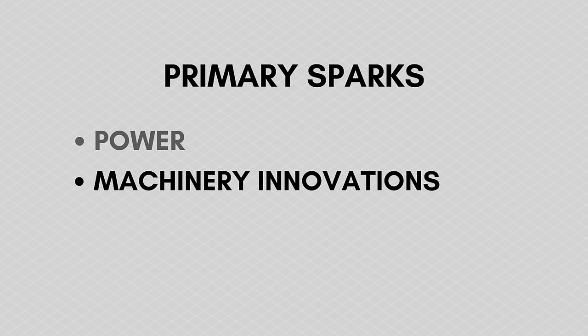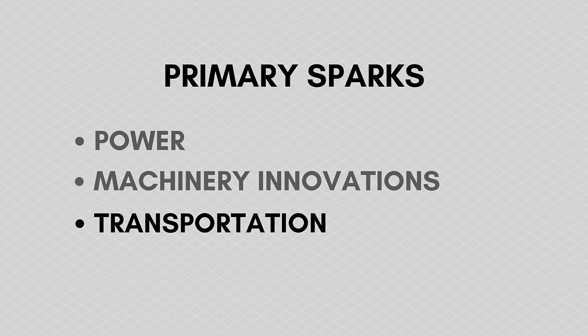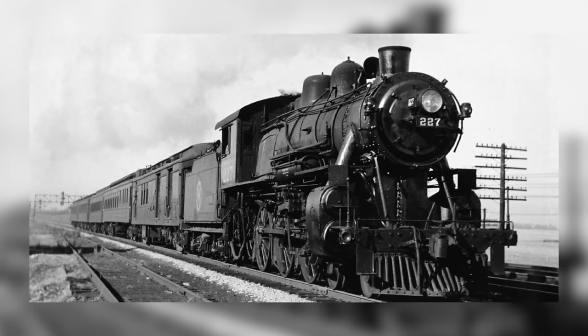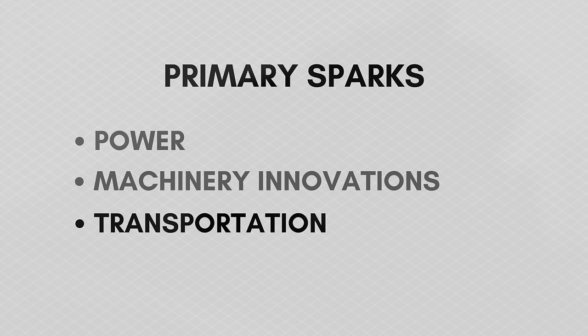Transportation was also booming at the time — that's another key ingredient of the Industrial Revolution. Like the railroads, they connected most cities in the U.S. by the mid-1800s. Steamboats started to catch on around 1800 as well, and the roads were improving in general. This rapidly changing context created a great need. The three ingredients — power, machinery, and transportation — came together to spark the Industrial Revolution.